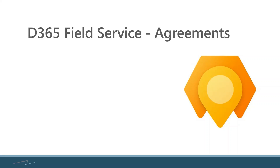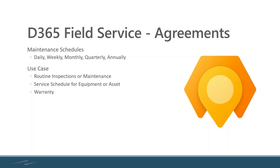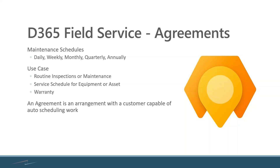Agreements are most commonly used in Field Service for maintenance schedules, and you can set them up to be daily, monthly, quarterly, annually, and there's a lot more flexibility beyond that with the scheduling once you get in to set up your recurrences. In many cases they're used to perform routine maintenance or inspections, maybe to keep a service schedule on a part or a piece of equipment or an asset, sometimes even as part of a warranty that you might offer to a customer. An agreement is essentially an arrangement with a customer that's meant to save time for your CSRs and dispatchers by basically auto-scheduling the work.